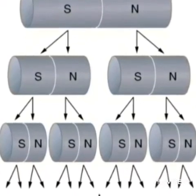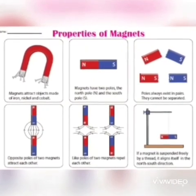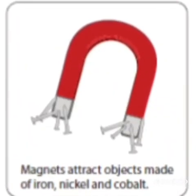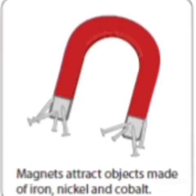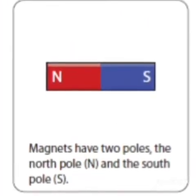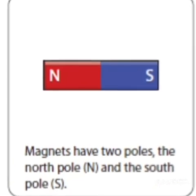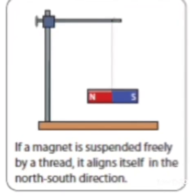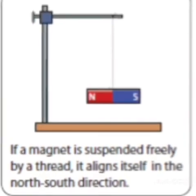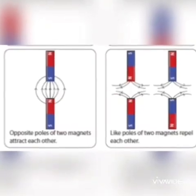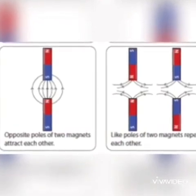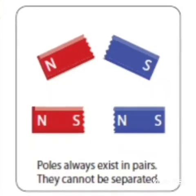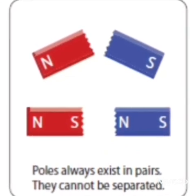That is why a magnet is also called a dipole. Now let's revise the properties of magnets: 1. Magnets attract objects made of iron, nickel and cobalt. 2. Magnets have two poles: the north pole and the south pole. 3. If a magnet is suspended freely by a thread, it aligns itself in the north-south direction. 4. Opposite poles of two magnets attract each other, whereas like poles of two magnets repel each other. 5. Poles always exist in pairs; they cannot be separated.